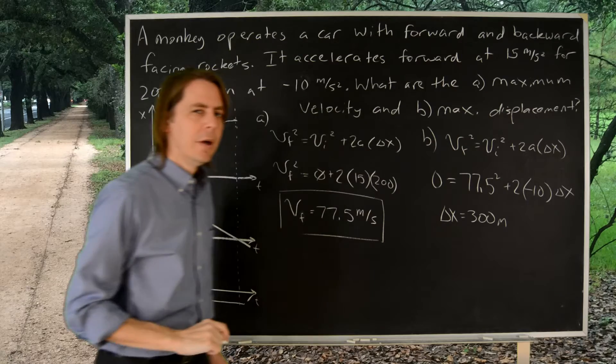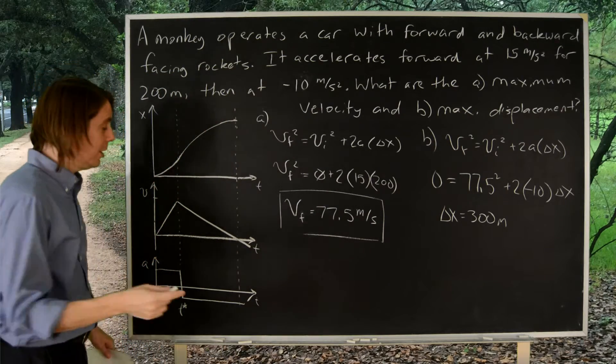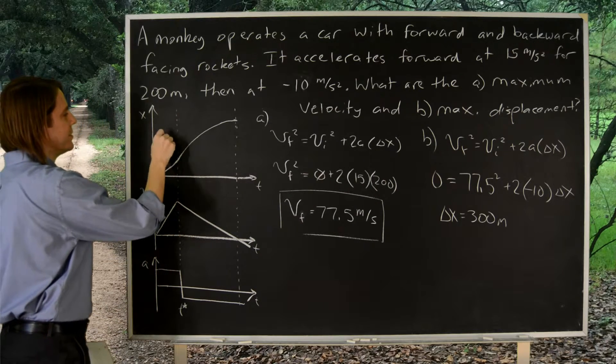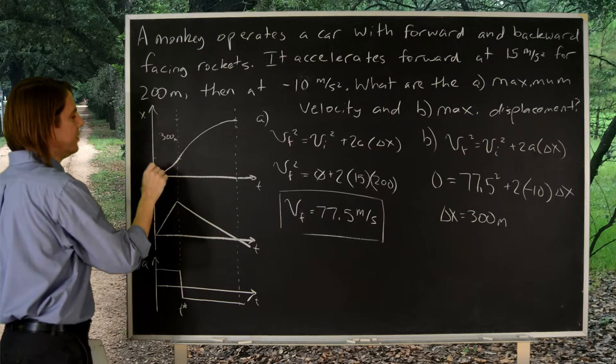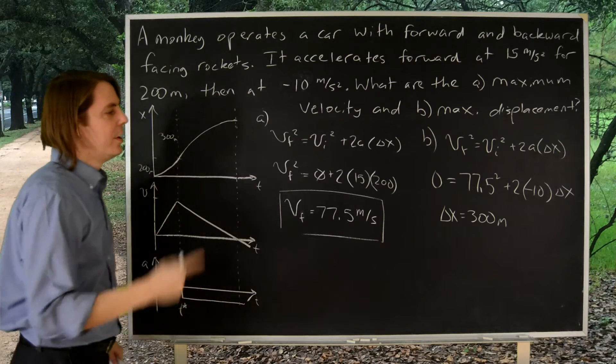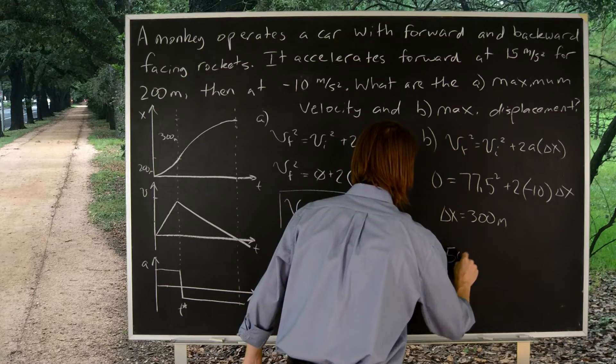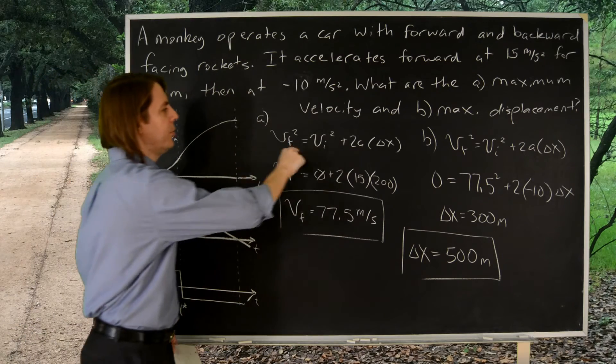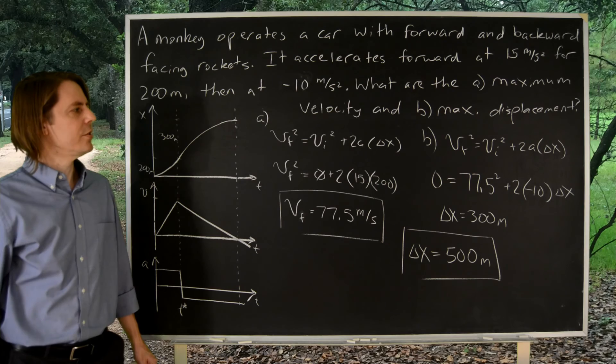But that's not the answer. What did it ask for? It asked for the maximum displacement for the whole problem. Remember, that is for this part. This is 300 meters from here to there. But we also have to add in the 200 meters from there to there. It went 200, and then it went 300. So the real answer, the maximum displacement, is 500 meters. So two steps, both done with our constant acceleration for displacement.